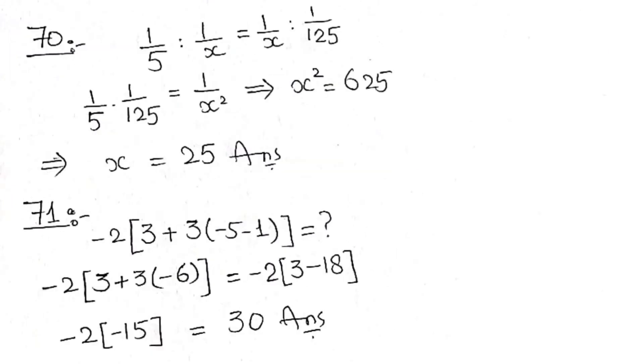Now the solution of 70, you can check this ratio question. We always multiply the last expressions and the middle one with each other. So after finding this, x squared equals 625 and x equals 25. And when we simplify question 71, then we can check that after solution we get the answer 30.